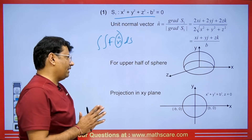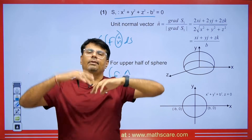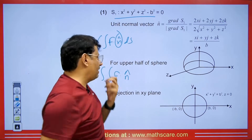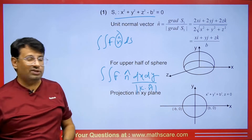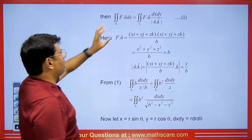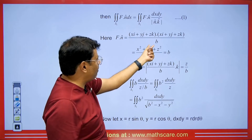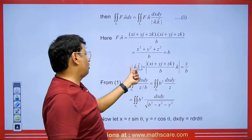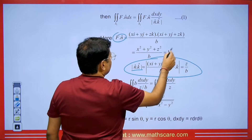Now we calculate f·n. We take the surface in the xy-plane, compute the upper half, and then double it to get the entire sphere. We get dx dy divided by k·n̂. The value of f is substituted, and since x² + y² + z² = b², we get b²/b = b. For n·k̂, the value is z/b. Substituting and converting to polar coordinates with x = r cosθ, y = r sinθ, dx dy = r dr dθ.